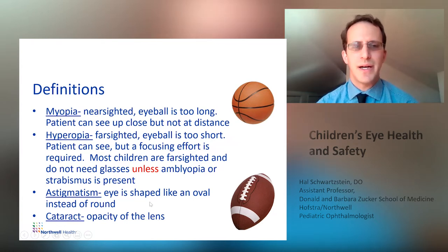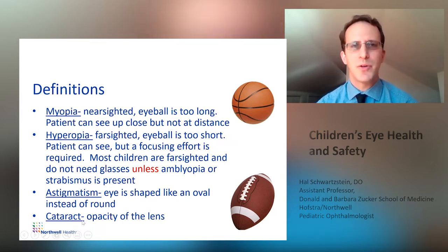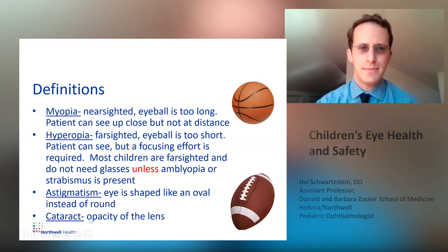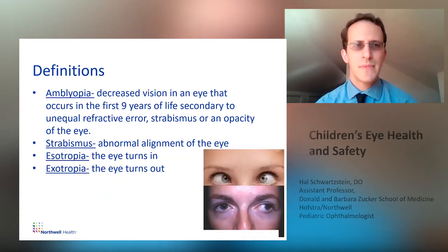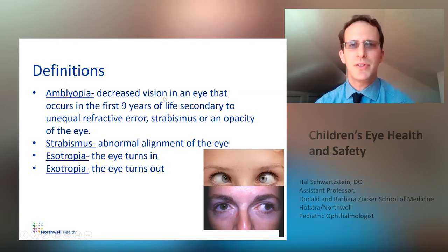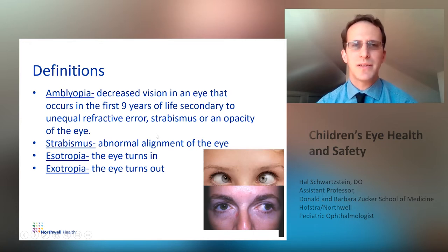Astigmatism is when the eye is shaped like an oval instead of round, like a football on its side. A cataract, which you may have heard about, is when there's an opacity of the lens. Amblyopia is when there's decreased vision in an eye that occurs in the first nine years of life. This can be due to need for glasses, eye misalignment, or an opacity of the eye.